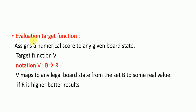The next type is the evaluation target function, which assigns a numerical score to any given board state. The target function V has the notation V: B to R, where B is a board and R is the real value representing the better result. V maps any legal board state from the set B to some real value. If R is higher, there is a better result.